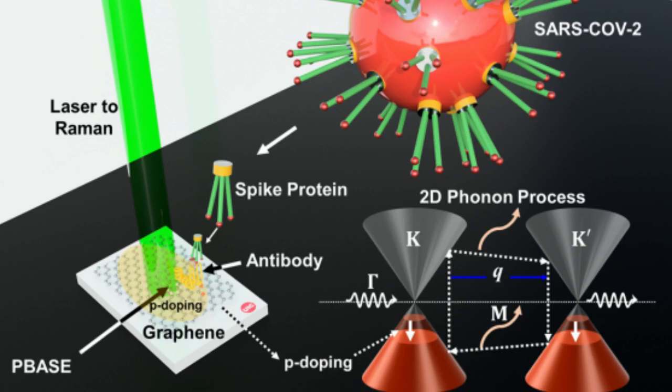Graphene is a single-atom-thick material made up of carbon. Carbon atoms are bound by chemical bonds whose elasticity and movement can produce resonant vibrations, also known as phonons, which can be very accurately measured. When a molecule, like a SARS-CoV-2 molecule, interacts with graphene, it changes these resonant vibrations in a very specific and quantifiable way.